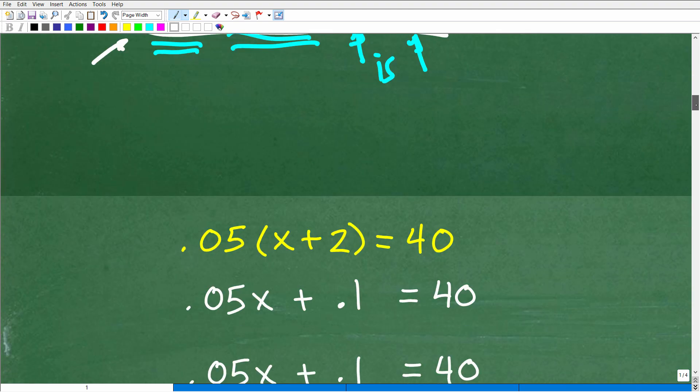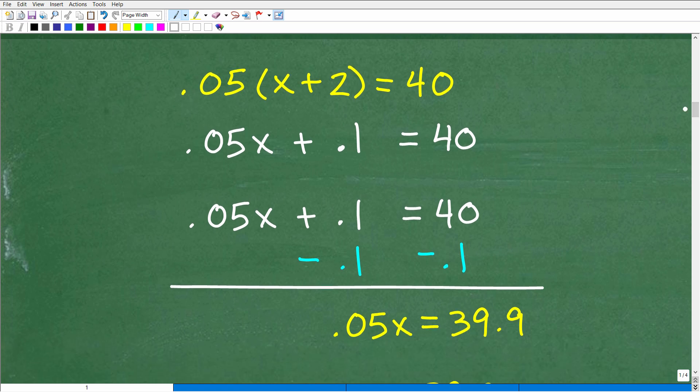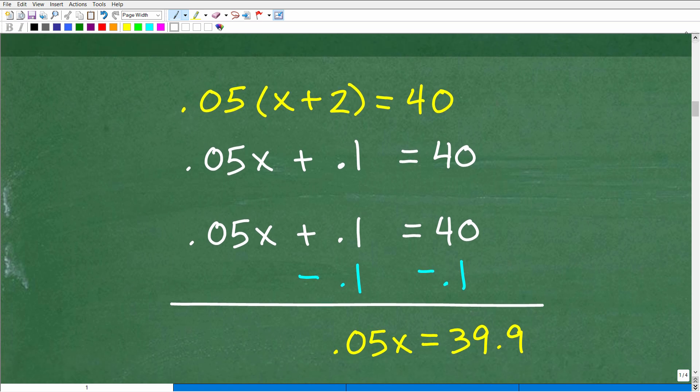All right, let's get into that right now. So we have 0.05 times x plus 2 is equal to 40. I'm not really thinking about percent right now. I'm just thinking about solving this equation. So the first thing we need to do is distribute this 0.05, i.e. multiply 0.05 times x. That's 0.05x. And then 0.05 times 2, that is 0.1. Again, use your calculator, not a problem, is equal to 40.